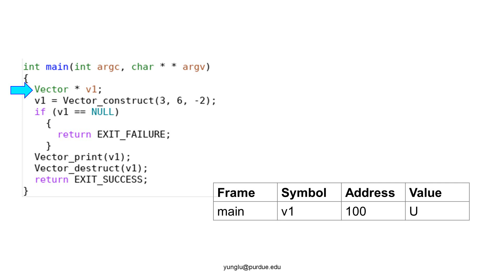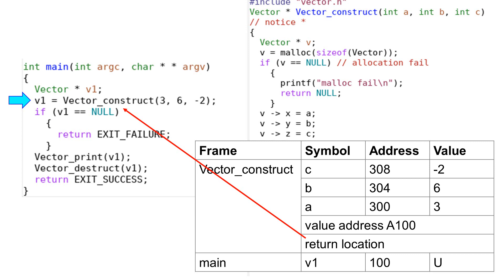In the main function, a pointer v1 is created. This is a local variable, so it is stored in the stack memory. Its value is unknown. Next, the main function calls vector construct. This is a function call, so a new frame is pushed to the top of the stack. The return location is the line after the function call. The value address is the address of v1 — in this example, v1's address is 100 and the value address is 100. The three arguments a, b, and c are 3, 6, and minus 2 respectively.